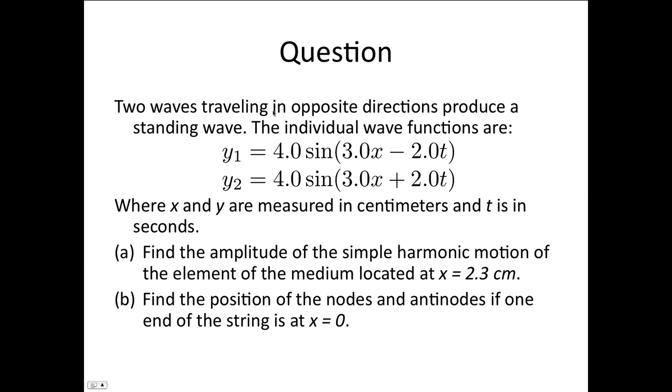So a question. Two waves traveling in opposite directions produce a standing wave. The individual wave functions are y₁ = 4.0 sin(3.0x - 2.0t) and y₂ = 4.0 sin(3.0x + 2.0t), where x and y are measured in centimeters and t is in seconds.